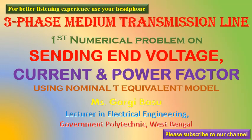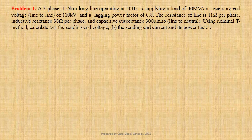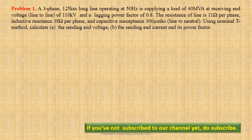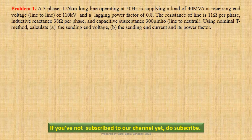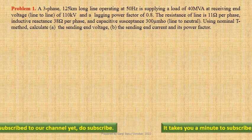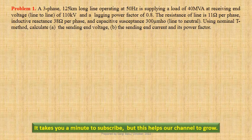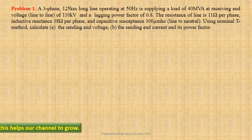A three-phase 125-kilometer long line operating at 50 Hz is supplying a load of 40 megavolt ampere at the receiving end with a lagging power factor of 0.8. The line-to-line receiving end voltage is 110 kilovolts. The resistance of the line is 11 ohm per phase, inductive reactance 38 ohm per phase, and capacitive susceptance 300 micromho line-to-neutral. Using the nominal T-method, we have to determine the sending end voltage, the sending end current, and its power factor.